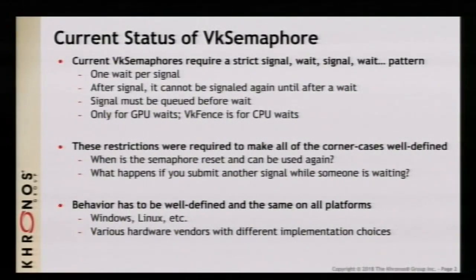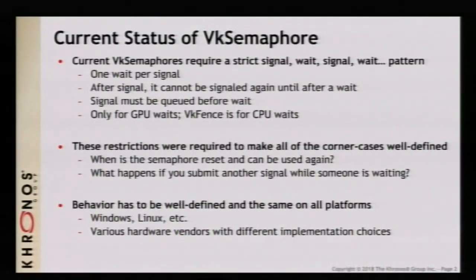Let's start with the current status of Vulkan semaphores. Semaphores in Vulkan are the primary synchronization object for synchronizing GPU-to-GPU dependencies. In order to deal with some use cases and corner cases, semaphores have a fairly strict set of limitations. In particular, they require a very strict signal-wait, signal-wait pattern on the semaphore object. You cannot trigger a semaphore in one submission and then wait on it for multiple submissions. You can't wait on it and then wait on it again before it's been signaled again. The signal operation — the work that's going to signal the semaphore — has to be enqueued before the work that's going to wait on the semaphore. And it's only for GPU-to-GPU waits; you can't do a CPU wait on a semaphore.